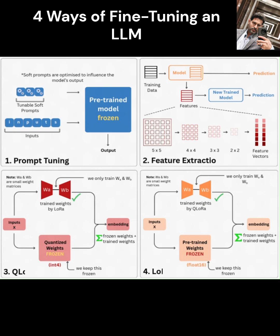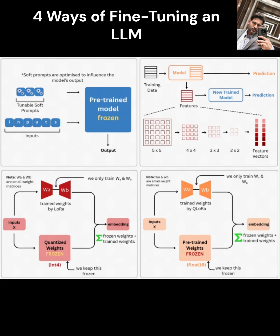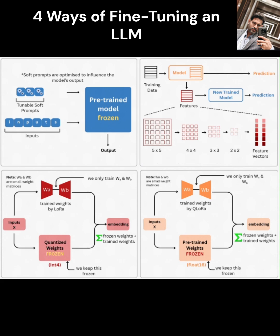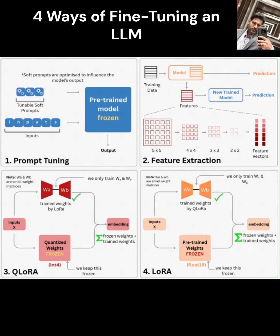First up, we have soft-prompting, sometimes called prompt-tuning. Imagine the huge LLM with its billions of internal settings — we call these weights. Soft-prompting is like saying: okay, we're not going to touch any of those billions of settings. Instead, we learn a tiny, special string of numbers — a small vector —